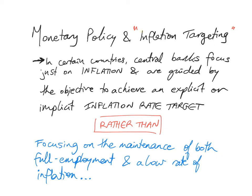What is inflation targeting and how does it relate to monetary policy? In certain countries, central banks focus just on inflation and are guided by the objective to achieve an explicit or implicit inflation rate target — say, two or three percent — because a healthy amount of inflation is actually good for the economy. Inflation targeting becomes their main objective rather than focusing on both full employment and a low rate of inflation, since there is usually a conflict between the two. This is called inflation targeting.